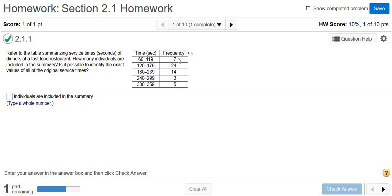In this problem we have a frequency table. It says that it summarizes service times of dinners at a fast food restaurant. So for example, 7 here means that 7 people had service times that fell somewhere between 60 and 119 seconds. The 24 means that there was 24 people, and their service times fell somewhere between 120 and 179 seconds.